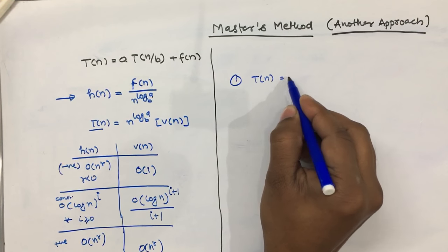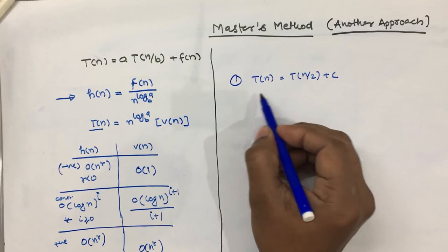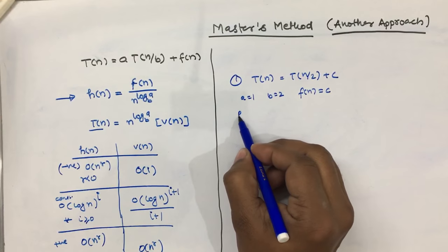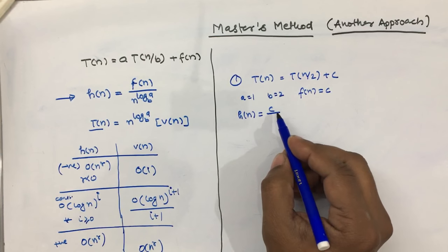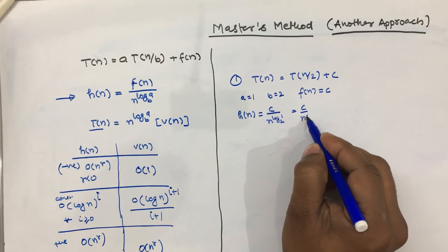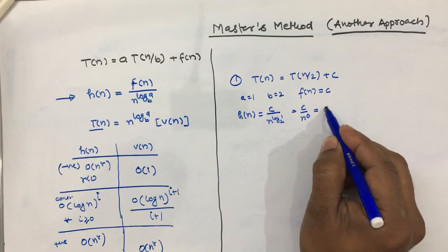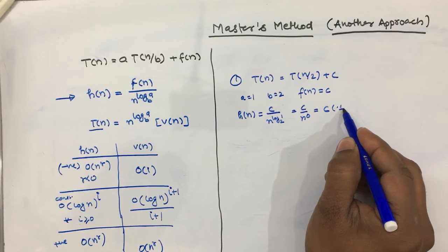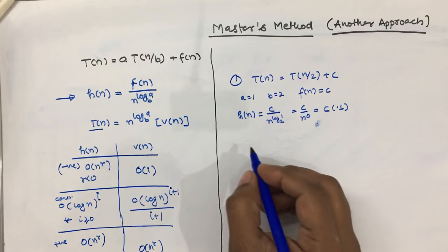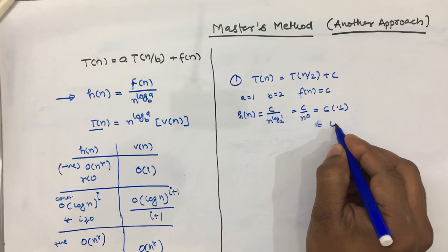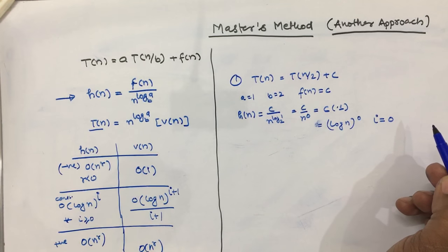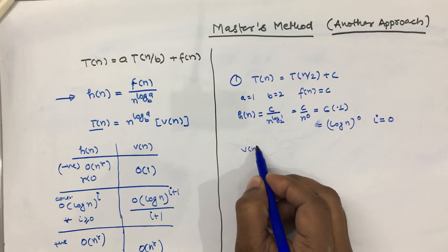Let's solve an example: T(n) = T(n/2) + c. We identify a = 1, b = 2, and f(n) = c. We then calculate h(n), which is c divided by n^(log_1 base 2) = c / n^0 = c, a constant. A constant value always lies in the second row of the table, so we rewrite it in the form log(n)^i, where i = 0.